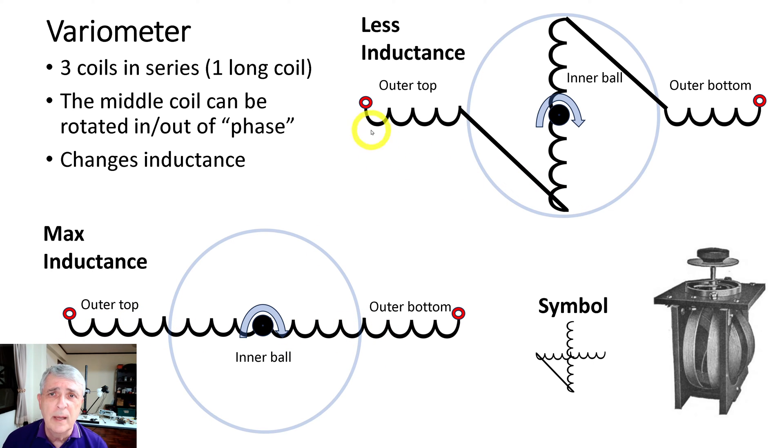And as you rotate it, it becomes less and less three coils in series until finally it pretty much cancels out and you get near zero inductance. The middle part of the coil can be rotated in and out of phase to give you that, and the main property is the inductance changes.